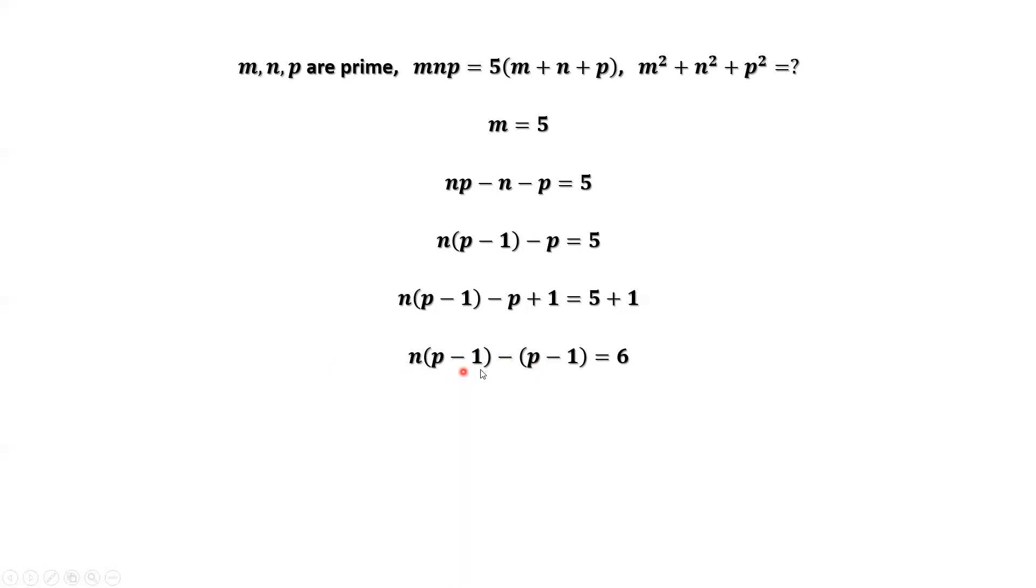Factoring p minus 1 out, we have p minus 1 times n minus 1 equals 6. 6 has possible combinations of 1 times 6, 2 times 3, 6 times 1, and 3 times 2.